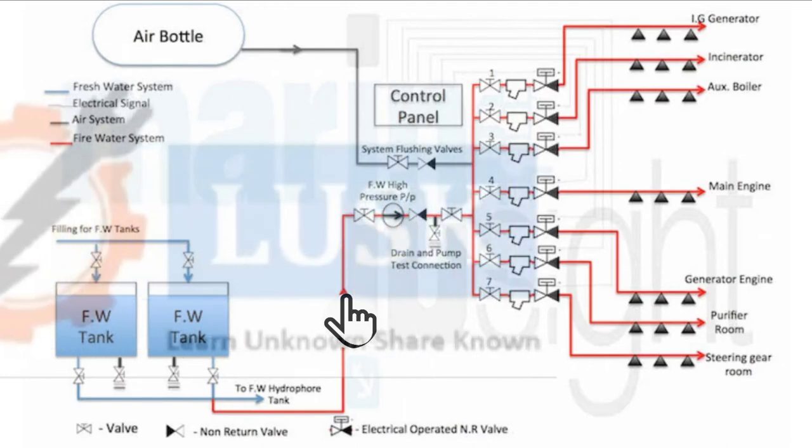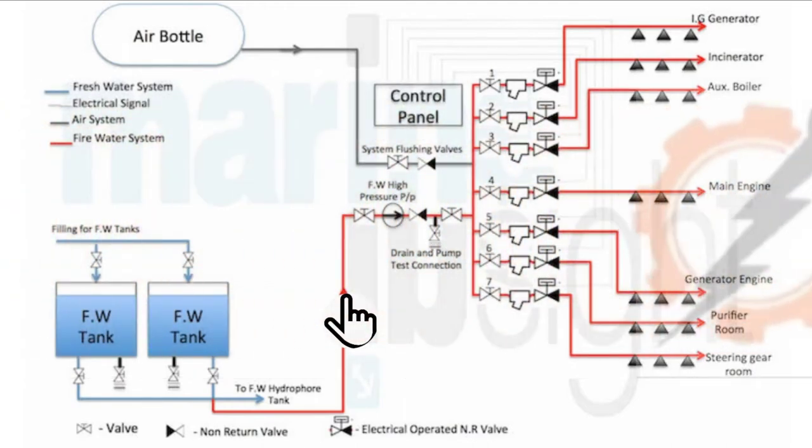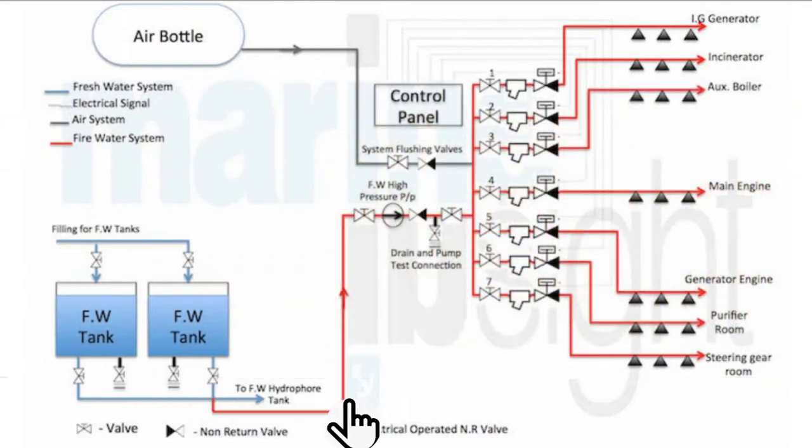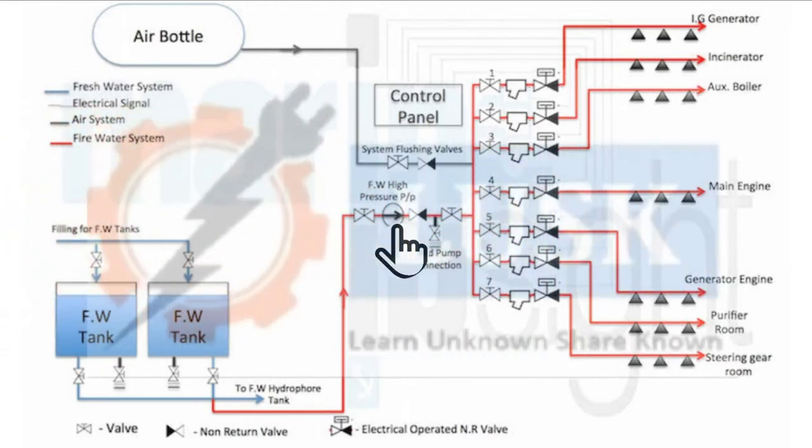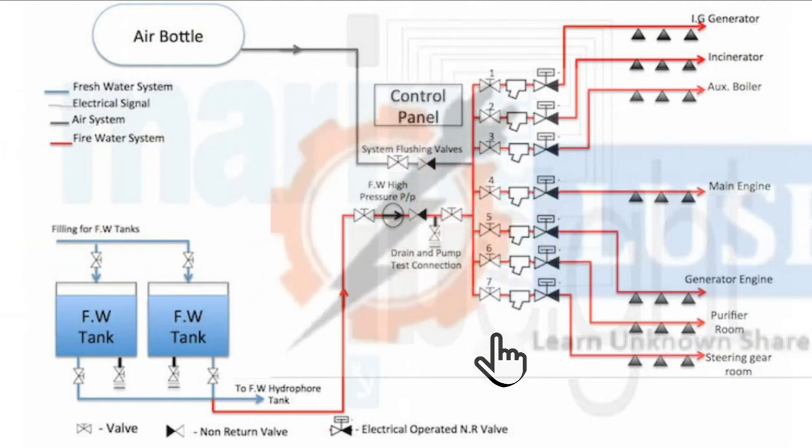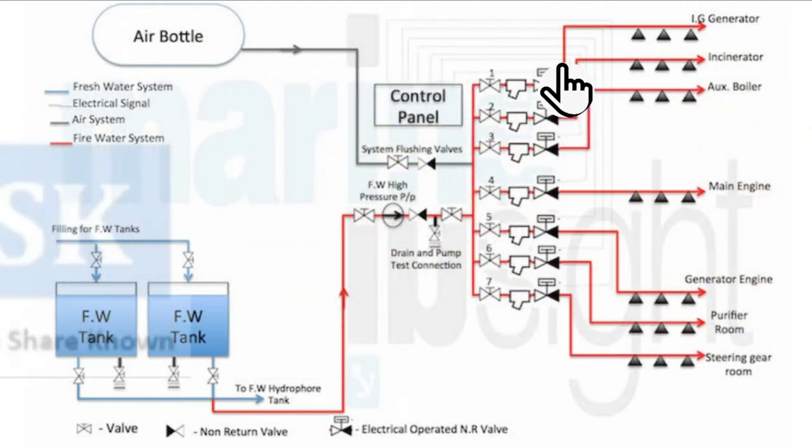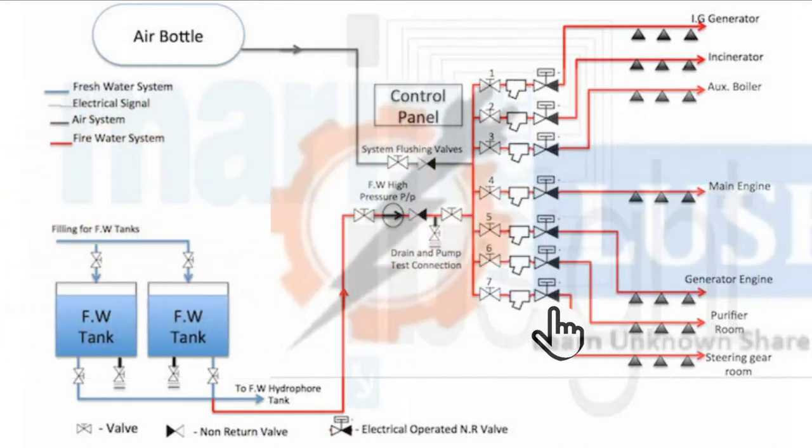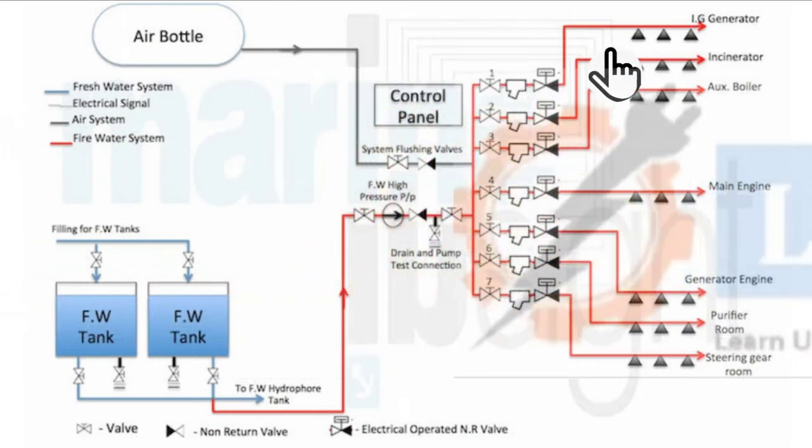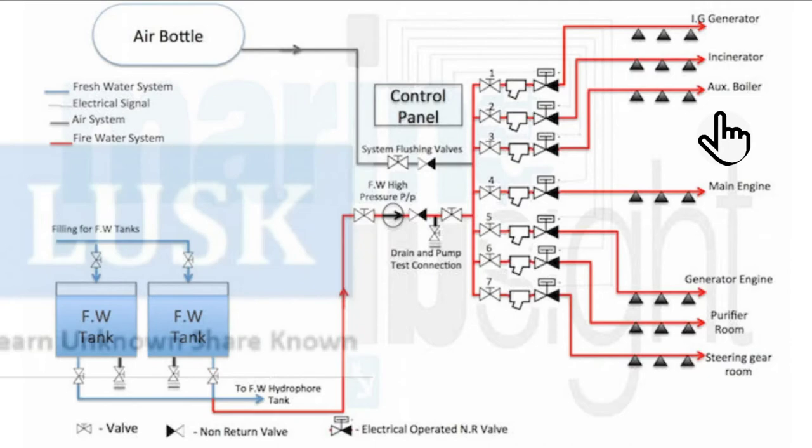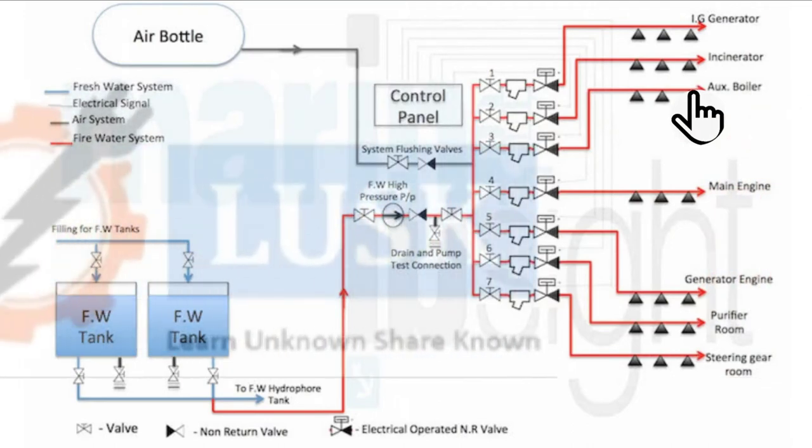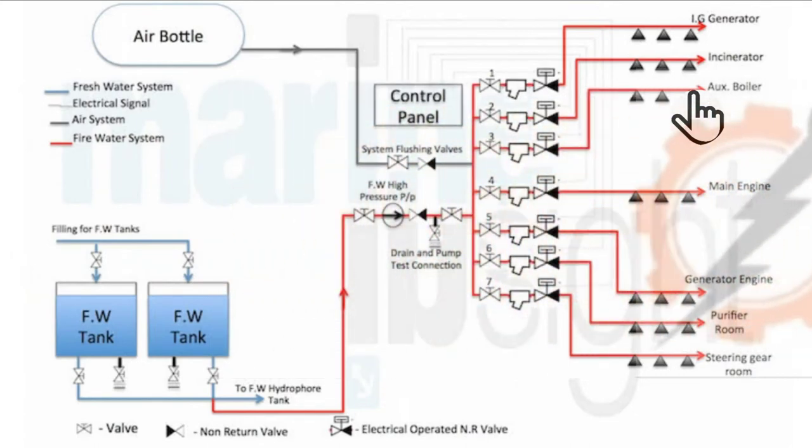Here, taking pressure water line from one of the pressure water tanks, you can see the red color line which is going here to the pump. This is high pressure pump. Here you can see one, two, three, four, five, six, seven, there are seven valves here. And then you can see seven more non-return type solenoid valves which are operated electrically. These are the areas where water systems are going: IGG, incinerator, auxiliary boiler, main engine, generator, purifier room, and steering gear room. Most of the ships don't have water system in steering gear room, but some ships are having.